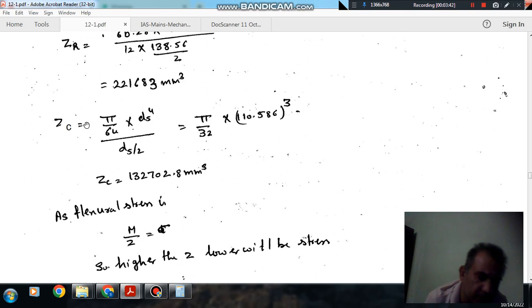And similarly for the circular section, the moment of inertia is pi by 64 ds to the 4th and y is here ds by 2. So it comes out as 132,702.8 mm cube.